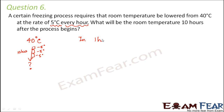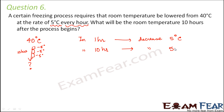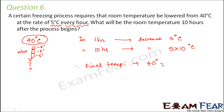In one hour the decrease is 5 degrees Celsius. Therefore in 10 hours the decrease would be 5 into 10 degrees Celsius. The final temperature would start at 40 degrees Celsius minus the total decrease, which is 40 minus 5 into 10. So this is 40 minus 50, which equals minus 10 degrees Celsius.